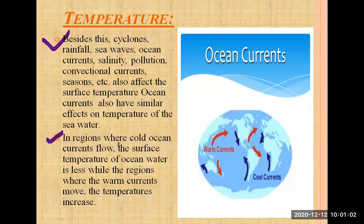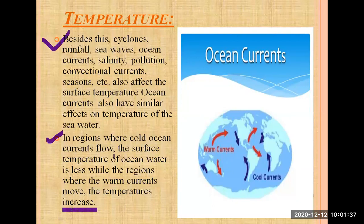In regions where cold ocean currents flow, the surface temperature of ocean water is less, while in regions where warm currents move, the temperature increases. There are two types of currents: warm currents and cold currents. You will be able to see more about these when we learn in greater depth about oceans.